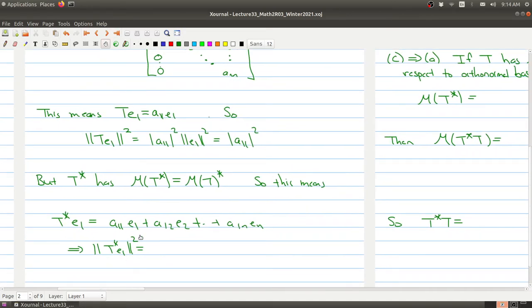And so then we can figure out the norm of this vector. And because all these vectors are orthonormal, we get that this is equal to the length of A11 squared plus A12 squared, all the way up to the absolute value of A1n squared.